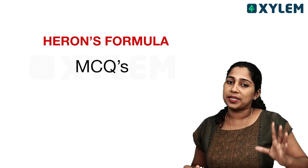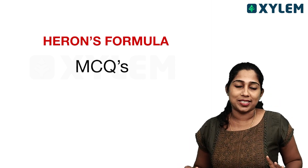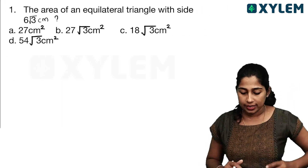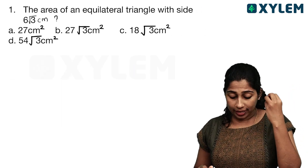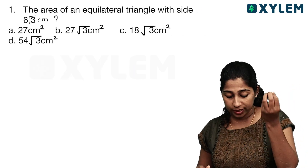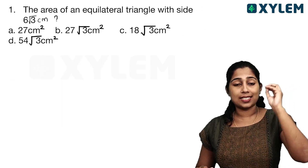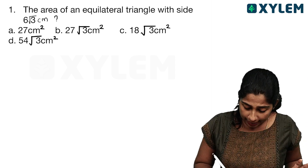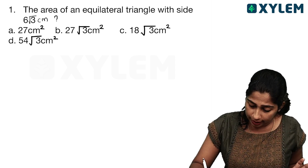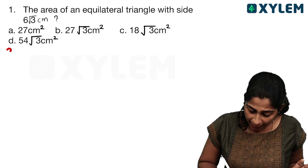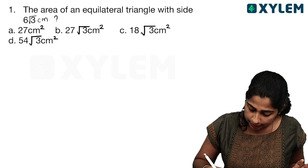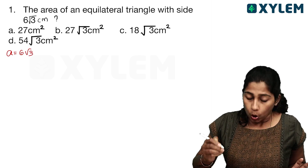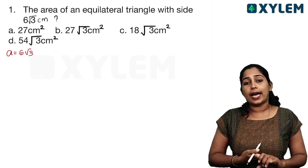We will discuss some important questions. The first question is: find the area of an equilateral triangle with side 6√3. This is the area of an equilateral triangle with side 6√3. So A is equal to 6√3.